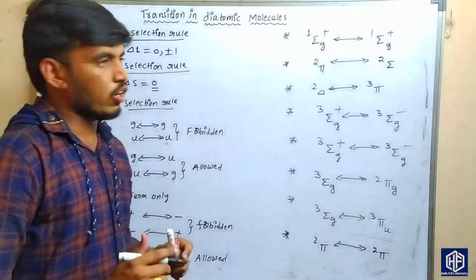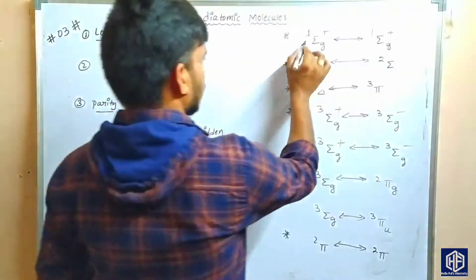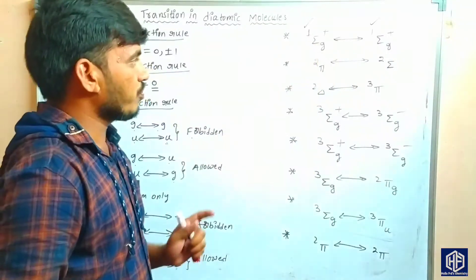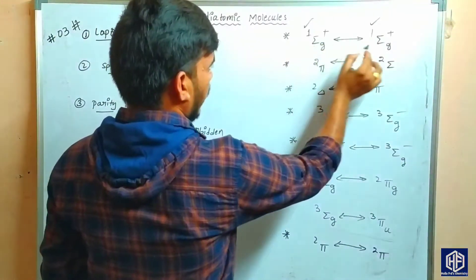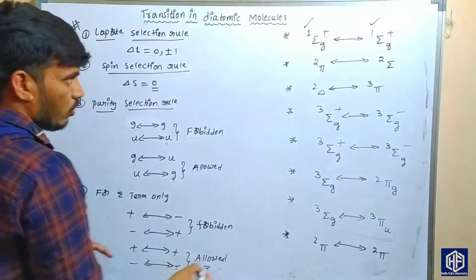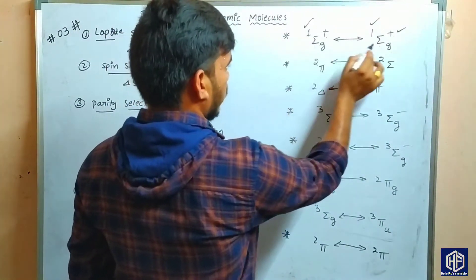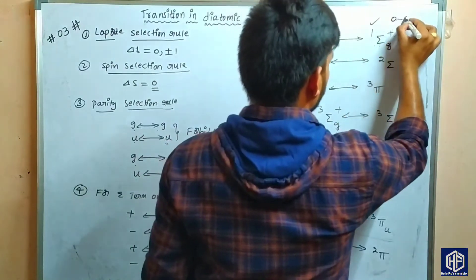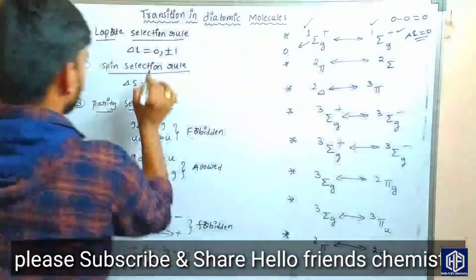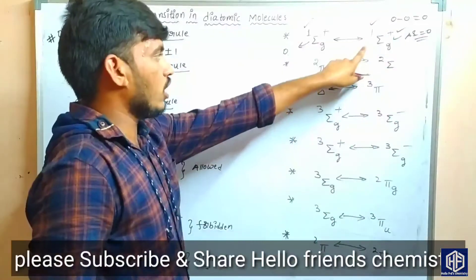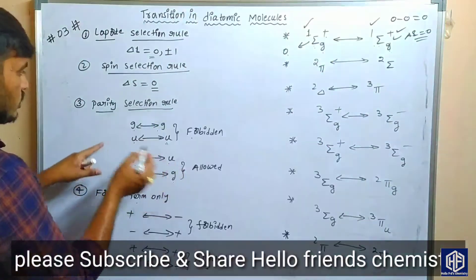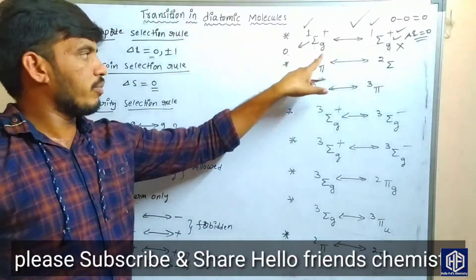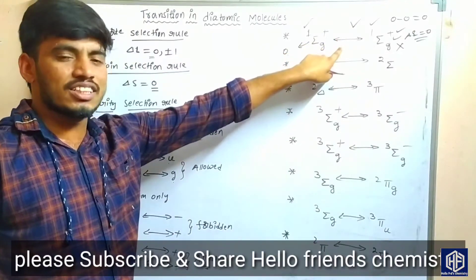Now coming to the first example: the transition ¹Σg⁺ to ¹Σg⁺. The spin multiplicity values are the same, so delta S equals zero — this is satisfied. Sigma-to-sigma means delta L equals zero minus zero equals zero, so the Laporte selection rule is satisfied. However, this is a zero-to-zero transition, which is a forbidden transition by the parity selection rule. So this transition is not possible.